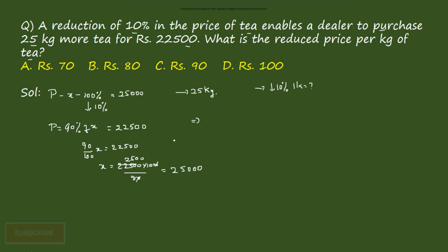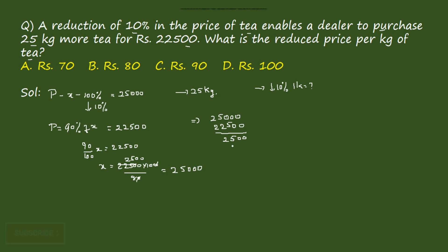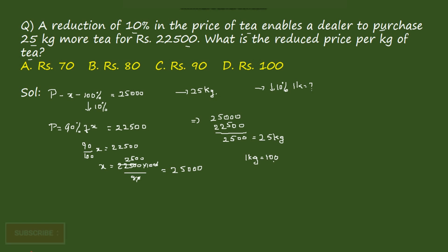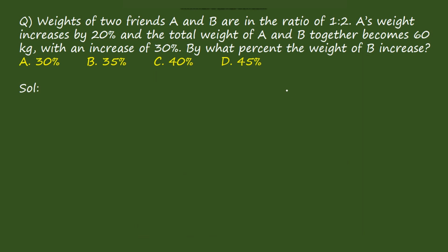We find the difference: at original price X = 2500, and at new price the amount is 2250. The difference 2500 − 2250 = 250 allows buying 25 kgs more, so 1 kg costs 250/25 = 10... but the actual price X = 100 rupees per kg, and the reduced price (10% less) = 90 rupees per kg. The answer is option C.